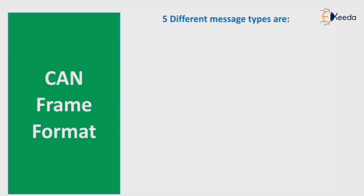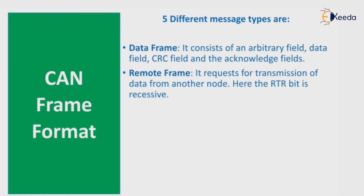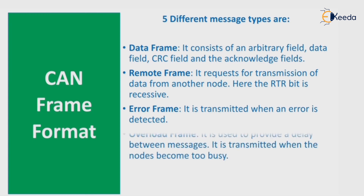There are five different types of messages in a CAN frame format: data frame, remote frame, error frame, overload frame, and valid frame. The data frame consists of an arbitration field, data field, CRC field, and acknowledge field. The remote frame requests transmission of data from another node.